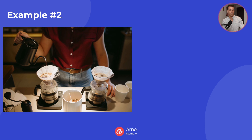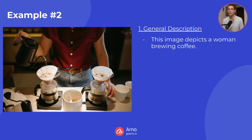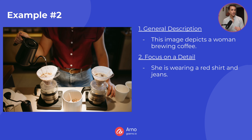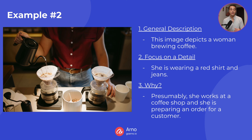Example number two — general description: this image depicts a woman brewing coffee. Number two, focus on a detail: she is wearing a red shirt and jeans. I decided to focus on what she was wearing — that's what caught my attention. And finally, number three, why? Presumably she works at a coffee shop and she is preparing an order for a customer.